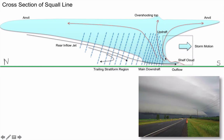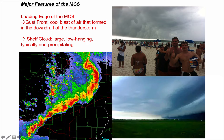The storm has three main components. First: the shelf cloud at the leading edge. Then: the main downdraft in the middle. Finally: the trailing stratiform region in the back, where you get light-to-moderate rain with some lightning and thunder for a couple of hours after the storm passes. The leading edge of the MCS, or squall line, is marked by a gust front — a cool blast of air formed in the downdraft of the thunderstorm — and on top of that gust front you get a shelf cloud.